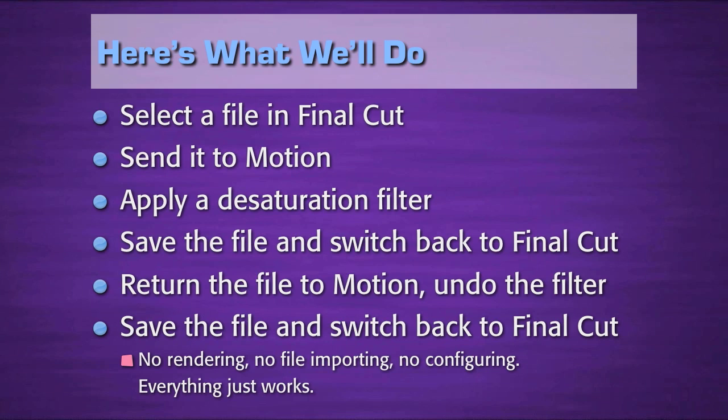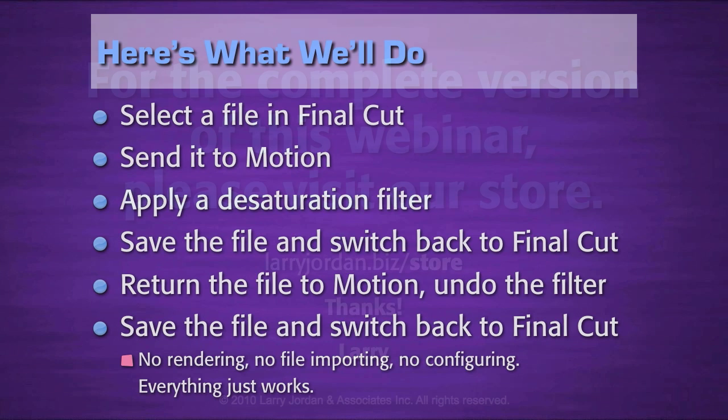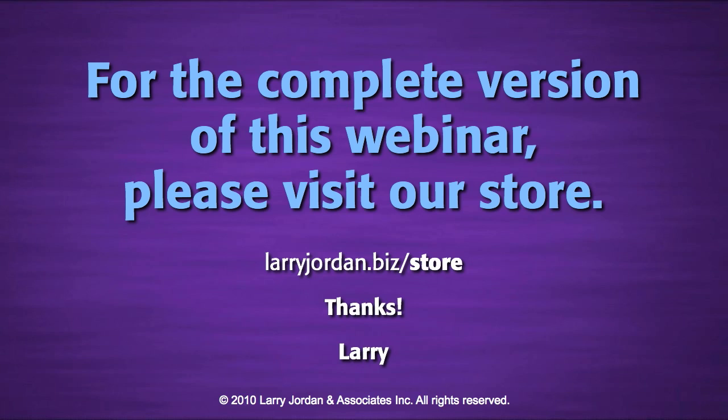Here's what we're going to do: I'm going to select a file inside Final Cut, send it over to Motion, and apply a desaturation filter — it's easy to see. Then we're going to save the file, switch back to Final Cut, return the file to Motion, undo the filter, save the file, and switch back to Final Cut. So: select the file in Final Cut, send it to Motion, apply a filter, save it — that brings it back to Final Cut. Then send it back to Motion a second time, take the filter out, save the file, and switch back to Final Cut. There's no rendering, no file importing, no configuring. Everything just works.